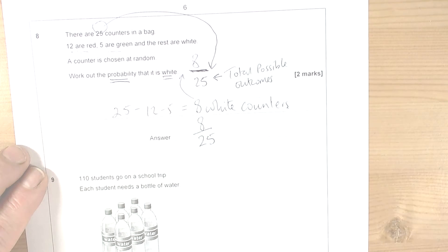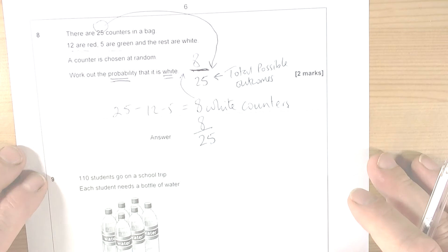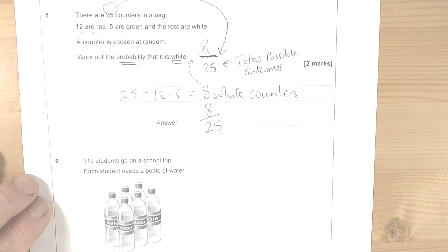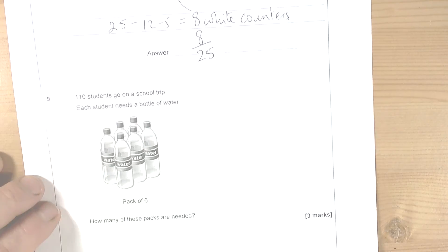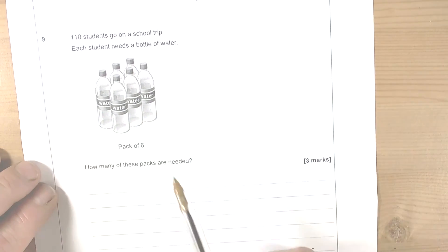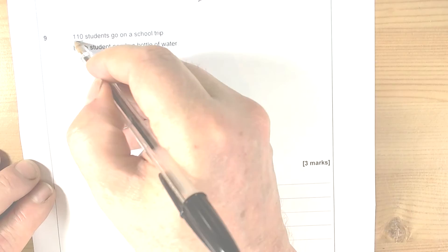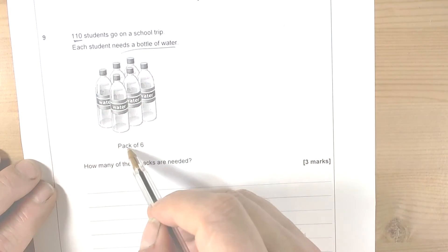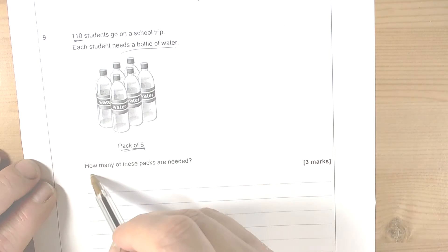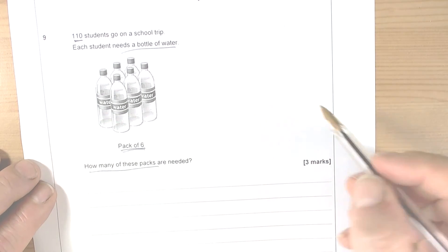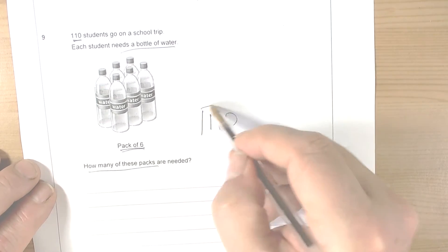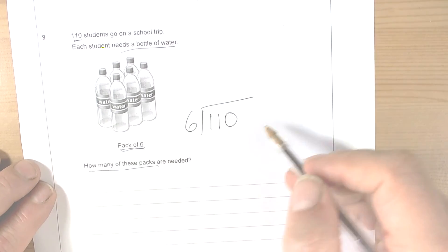Okay, so when we go to the next question, it talks about 110 students. Each student needs a bottle of water and they're sold in packs of 6. The question says how many packs are needed, so really they're saying 110 divided by 6.